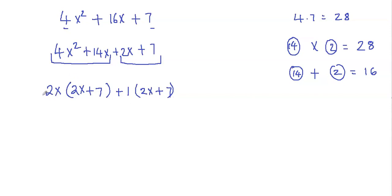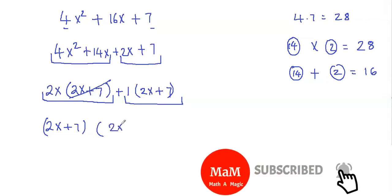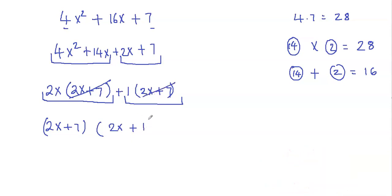Now I've got two groups again. I see that both groups have 2x plus 7 in common, so I can factor out 2x plus 7. Factoring it from the first group leaves 2x, and factoring it from the second group leaves positive 1. So my factors are going to be (2x + 7)(2x + 1). This makes sense because when we factor, we get the product of two binomials.